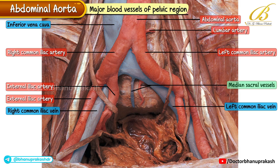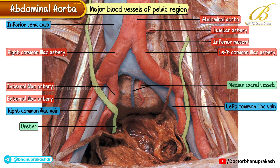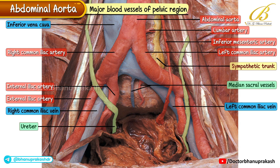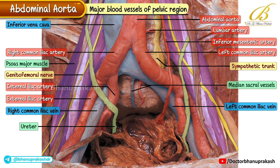A lumbar artery can be seen on the left side of the lower part of the abdominal aorta. The ureter crosses over the common iliac vein as well as the internal and external iliac arteries on both sides. The inferior mesenteric artery crosses over the left common iliac vein. Medial to the inferior mesenteric artery lies the sympathetic trunk.